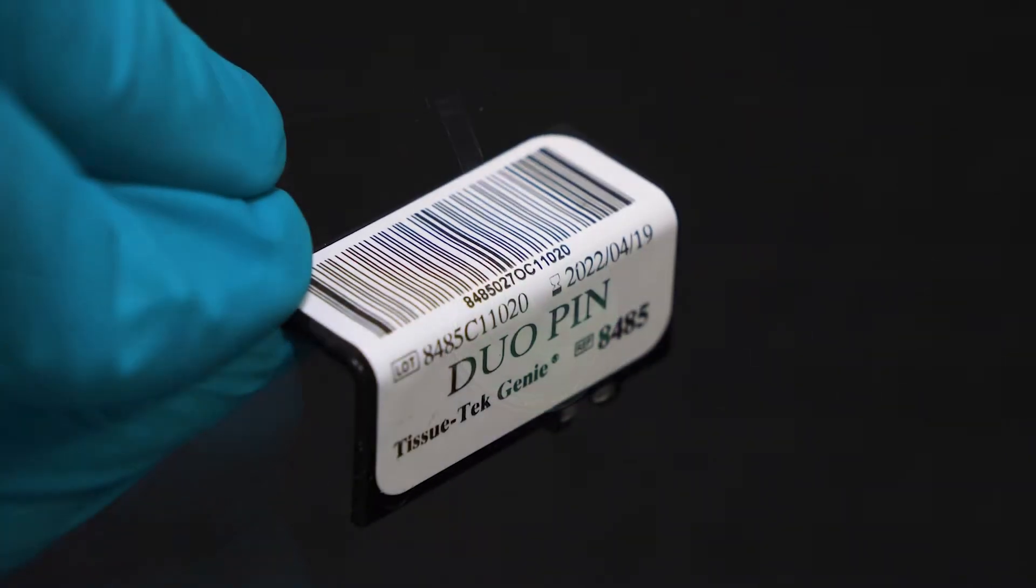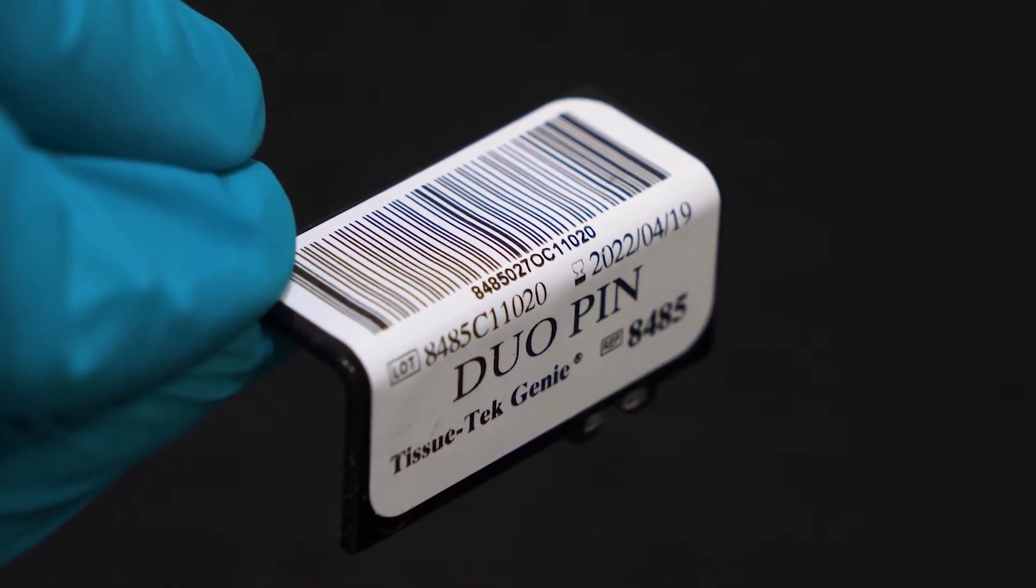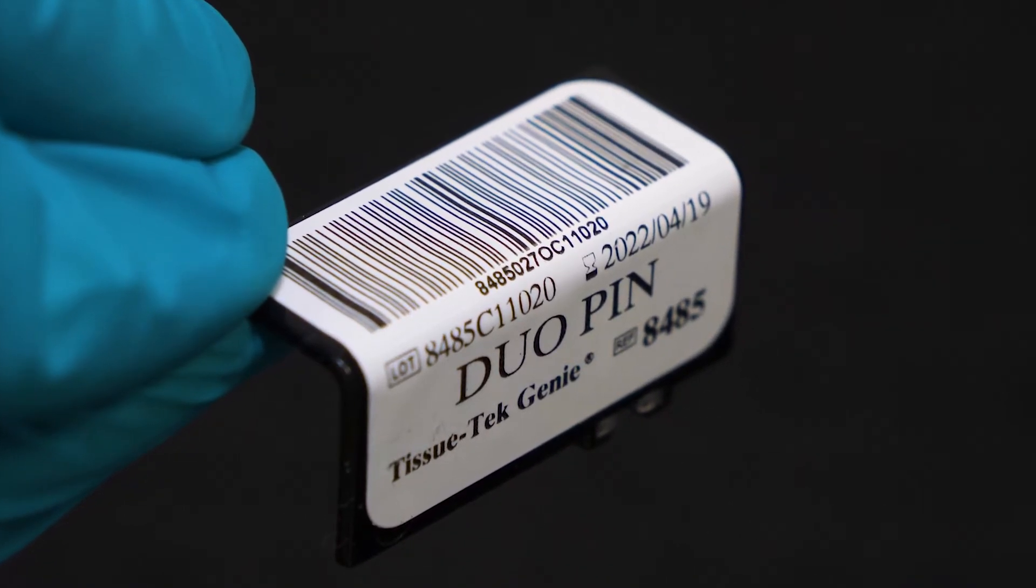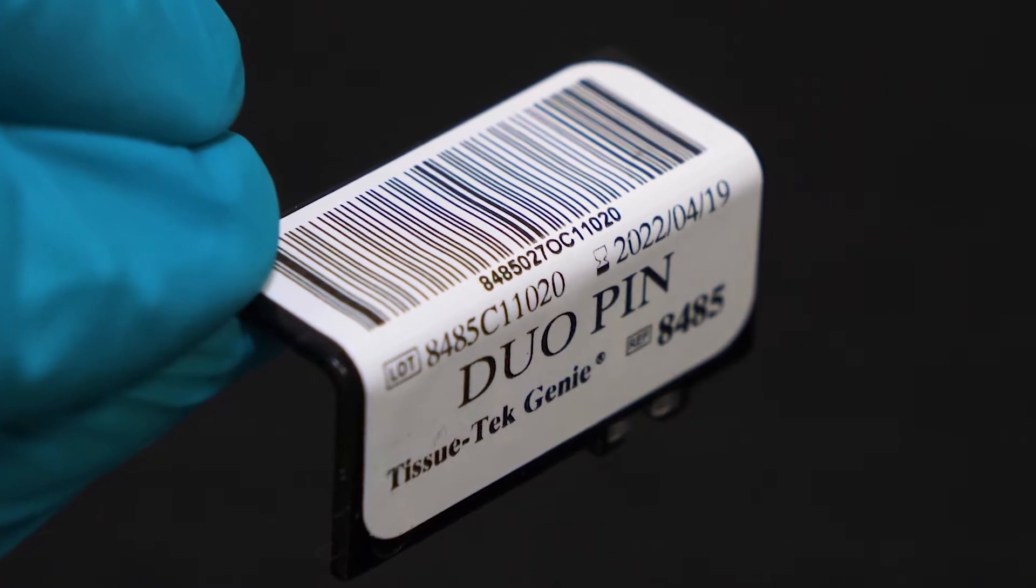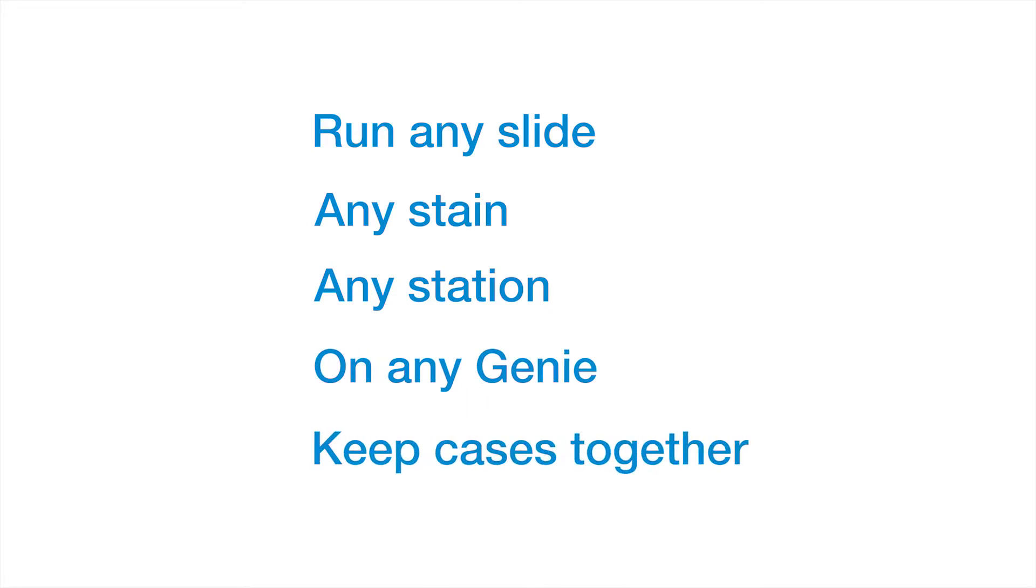Each capsule is paired with a plastic tag that identifies the antibody, antibody cocktail, or probe in it. Loaded together with a slide onto a staining station, it enables you to run any slide, any stain, any station, on any Gini. To keep cases together. No more tedious and time-consuming batching and sorting of slides.